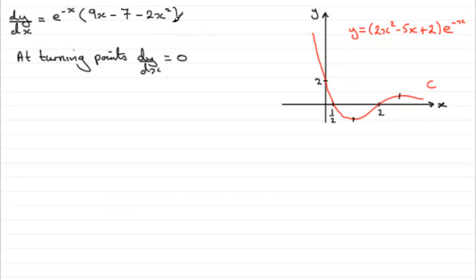So we just put this equation equal to zero. So therefore we have e^(-x) multiplied by 9x minus 7 minus 2x² equals zero. And again, when we've got something like this, two factors being multiplied together equaling zero, one or more must be equal to zero. But e^(-x) can't equal zero.